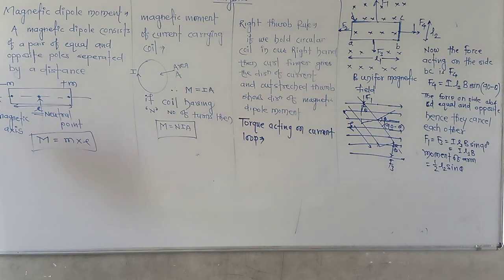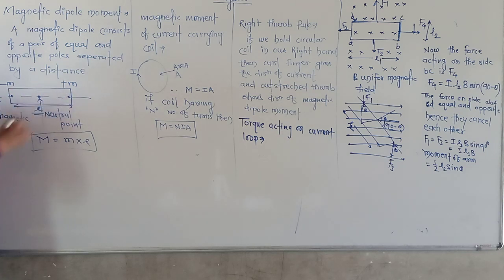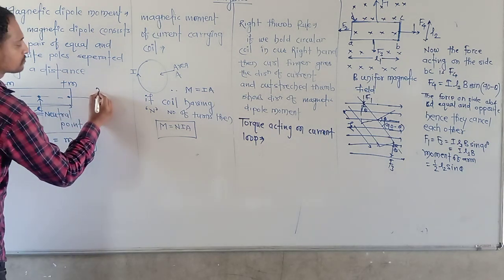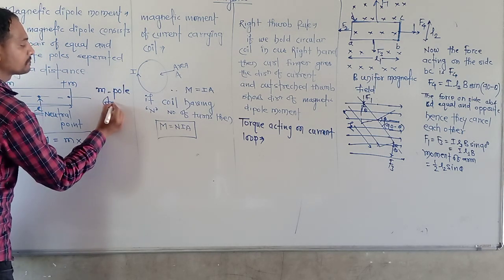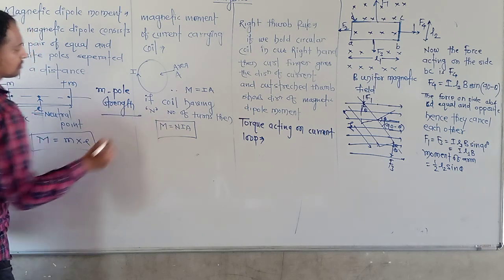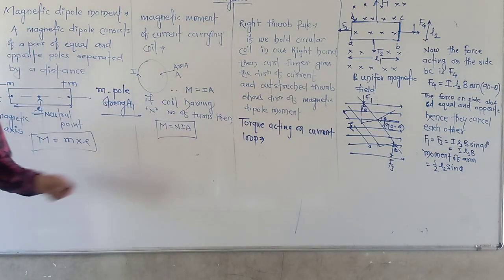First of all, we are going to discuss the bar magnet. Dipole means two poles, so here we have two poles: North and South. The pole strength is denoted by small m. On the South Pole it is negative, and on the North Pole it is positive.